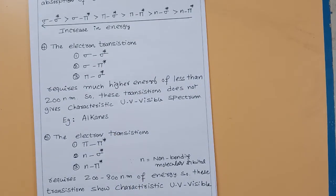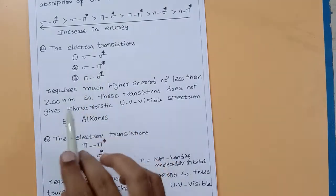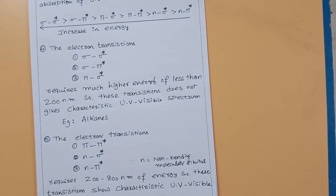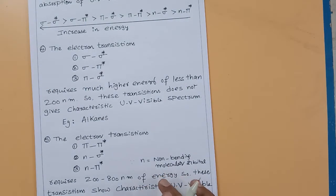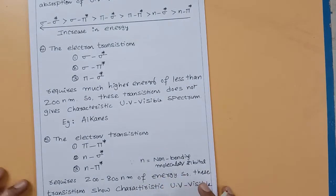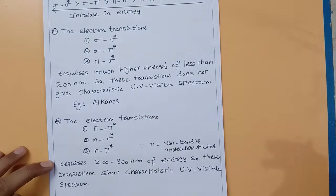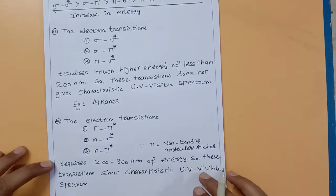The transitions sigma to sigma-star, sigma to pi-star, and pi to sigma-star require energy corresponding to less than 200 nanometers. These transitions do not give characteristic UV-visible spectra. For example, alkanes do not give a characteristic UV-visible spectrum because they only show these higher energy transitions.